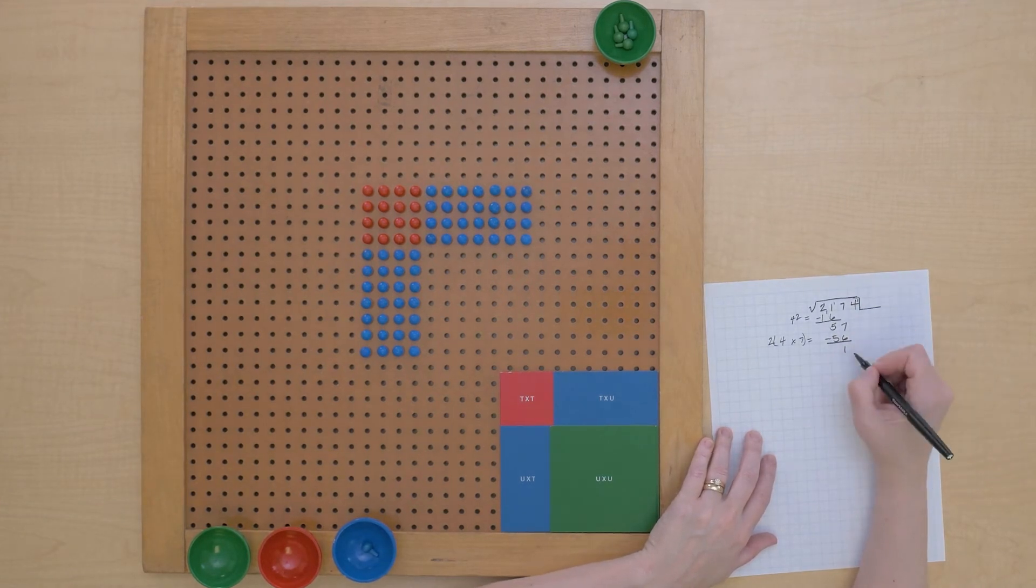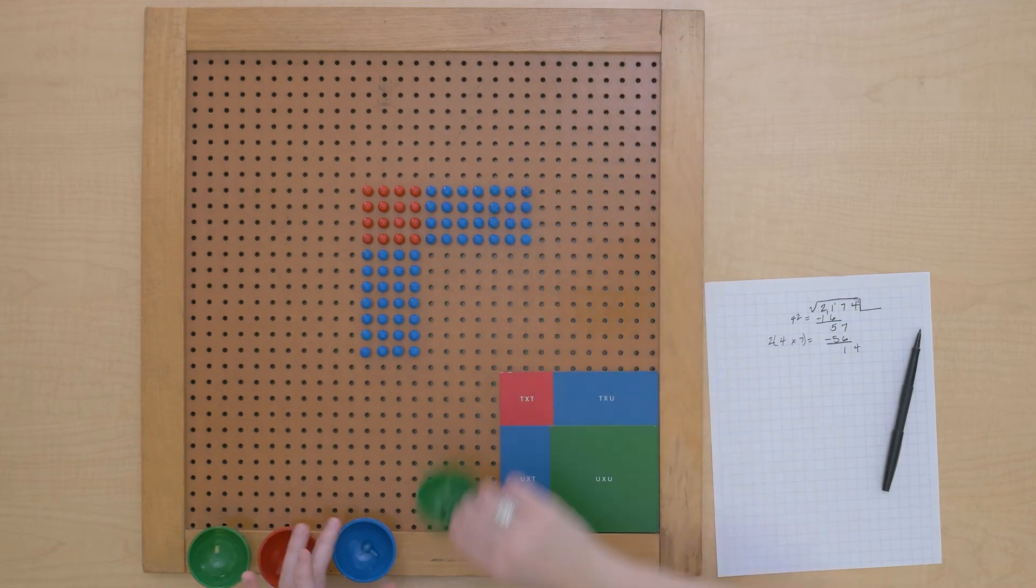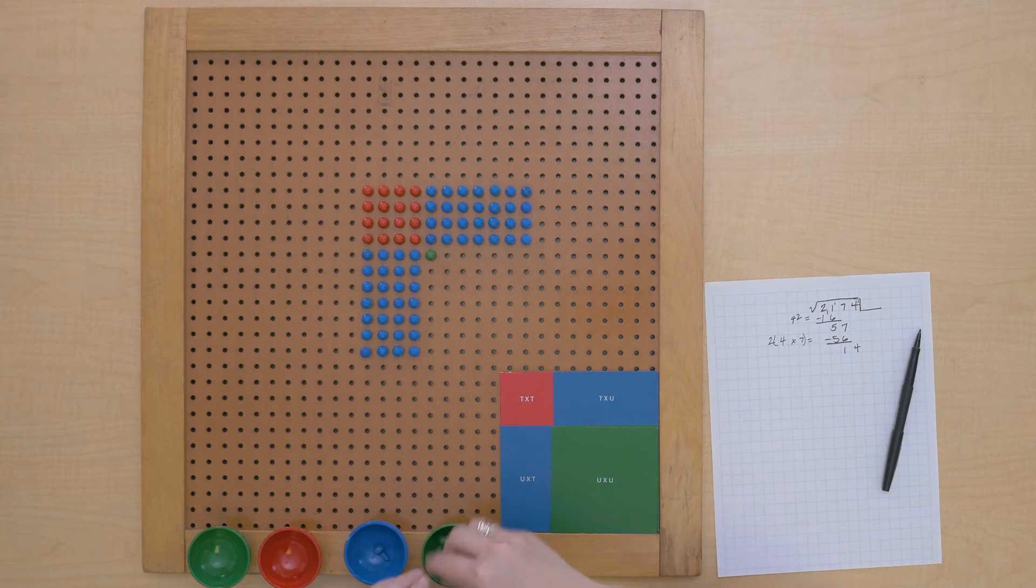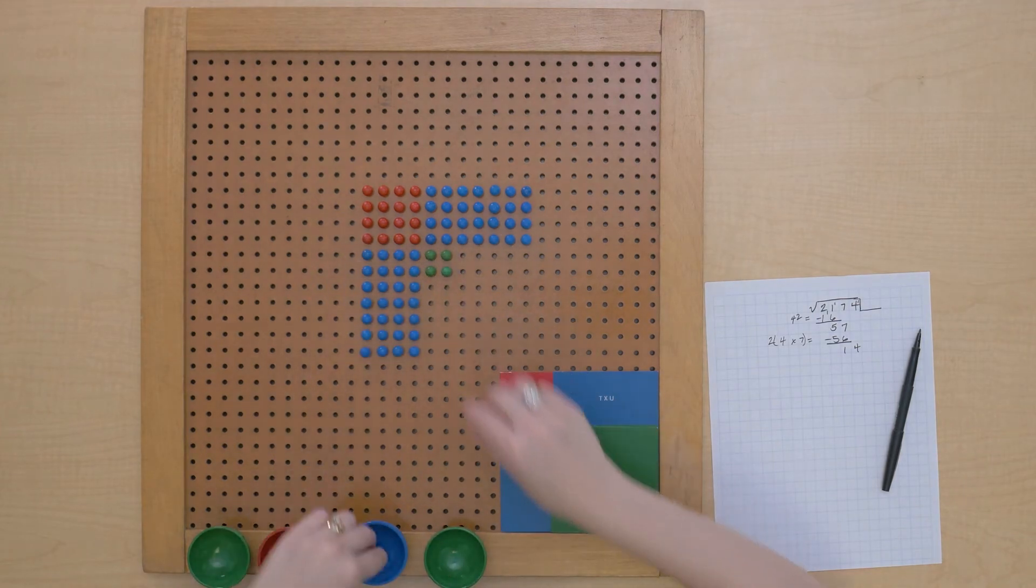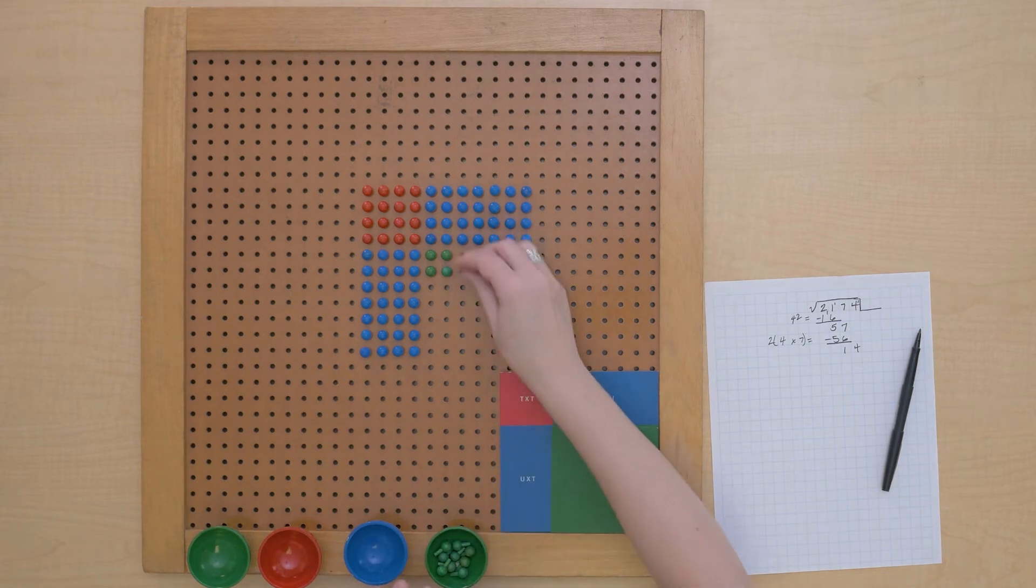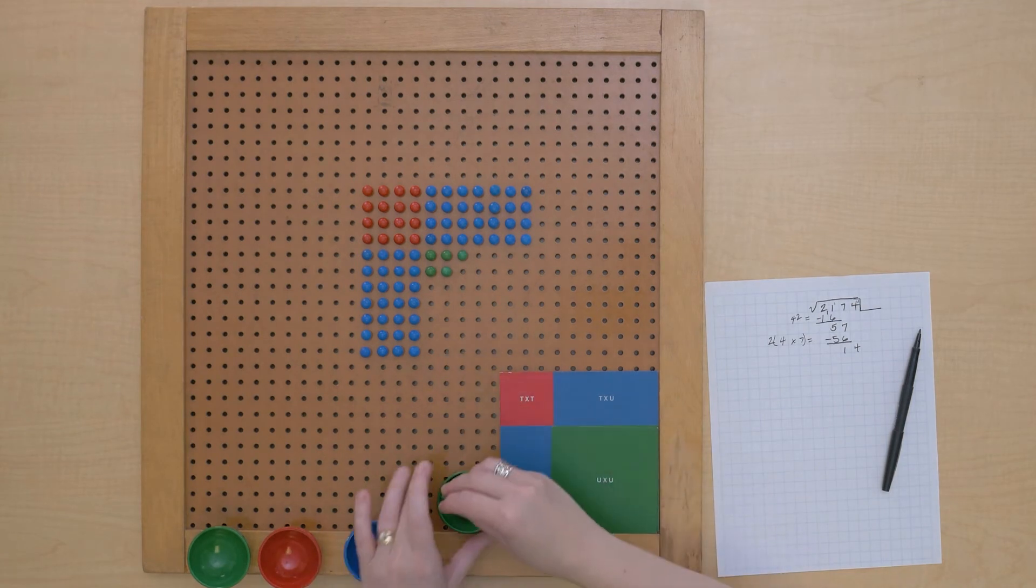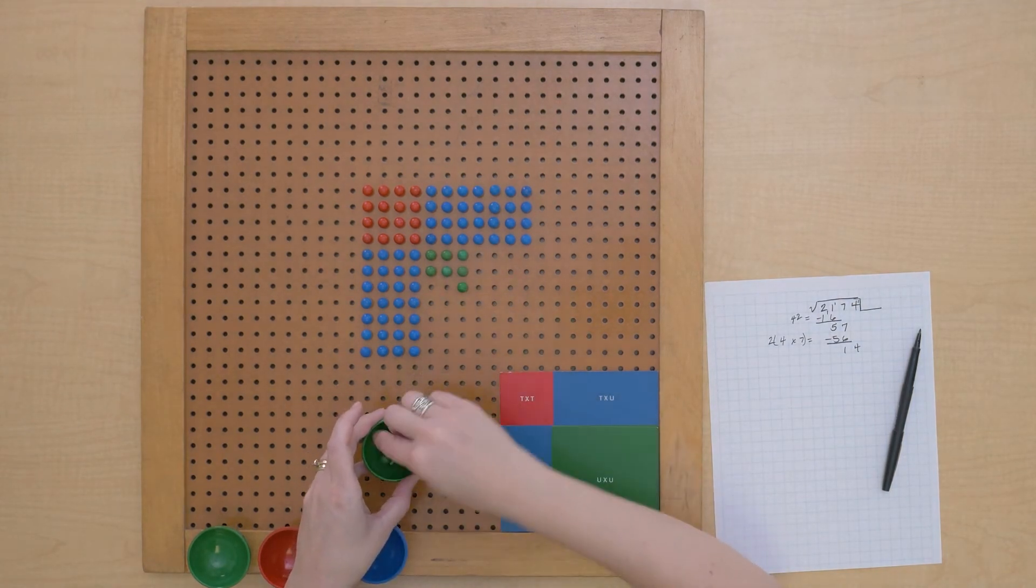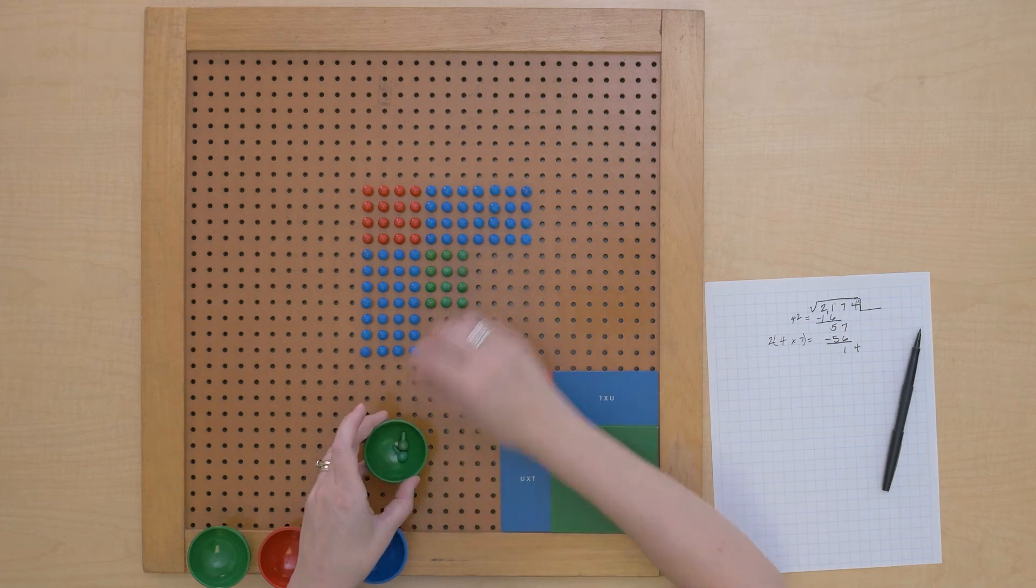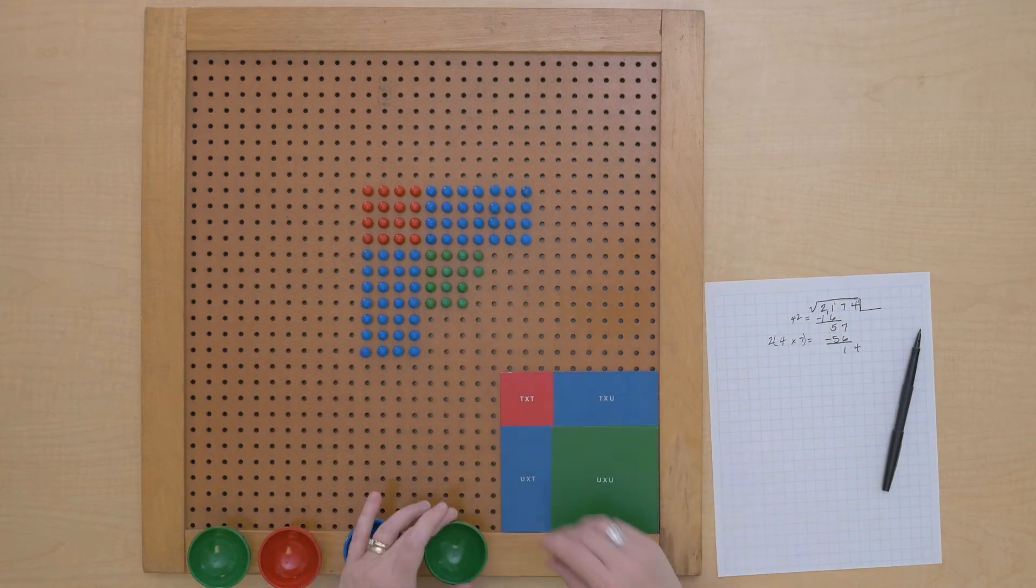We have one left. Let's bring down our fours and start building our unit square. Hmm. I'm beginning to see a problem here. I don't think I have enough beads or pegs to build that square.